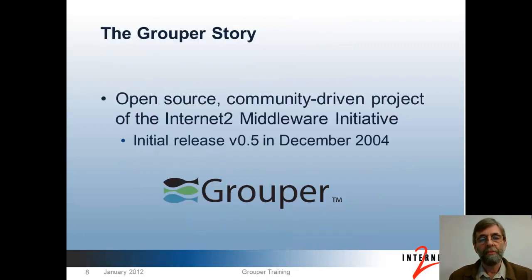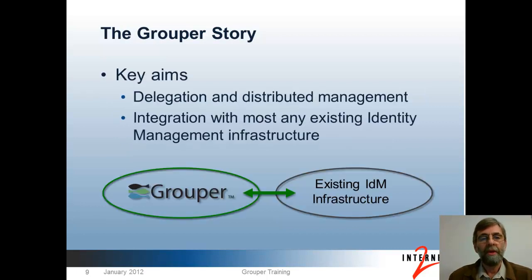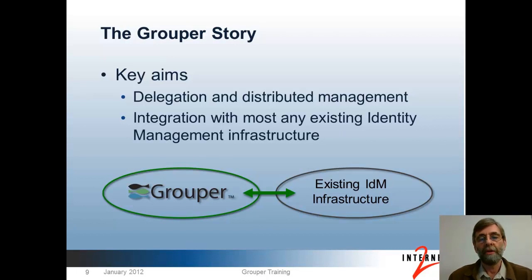That's the general picture. Grouper has been developed in parallel with our refining of that picture. It's an open source, community-driven project guided by the Internet2 middleware initiative. The first release was v0.5 in December 2004. The main reasons for developing our own system geared for universities and research organizations is that off-the-shelf tools aren't capable of achieving the highly distributed footprint for access management needed at universities. Supporting active delegation to achieve that widely distributed management footprint is a key aim, successfully met by Grouper.